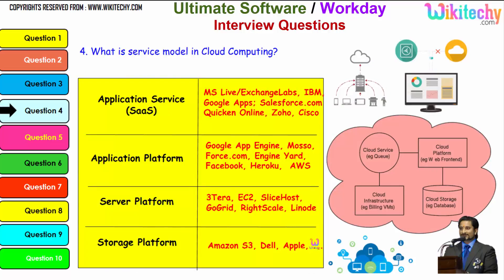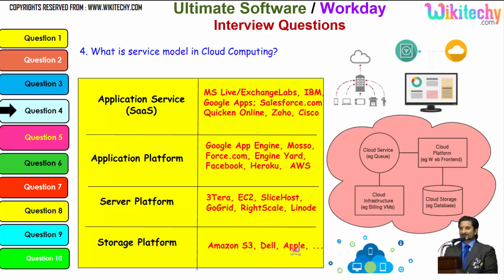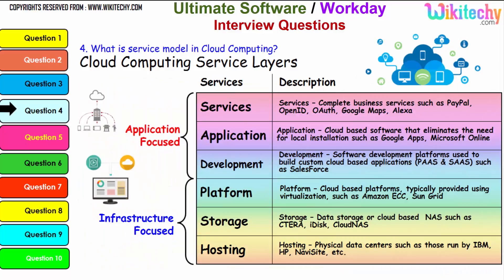Digging further into the service model: the application service, application platform, and server platform are distinct layers. The storage platform is provided by Amazon S3, Dell, and Apple. The important service layers are: services, application development, platform, storage and hosting, and there are typical examples under each of these services. These are important services which will also be asked in cloud computing interviews.